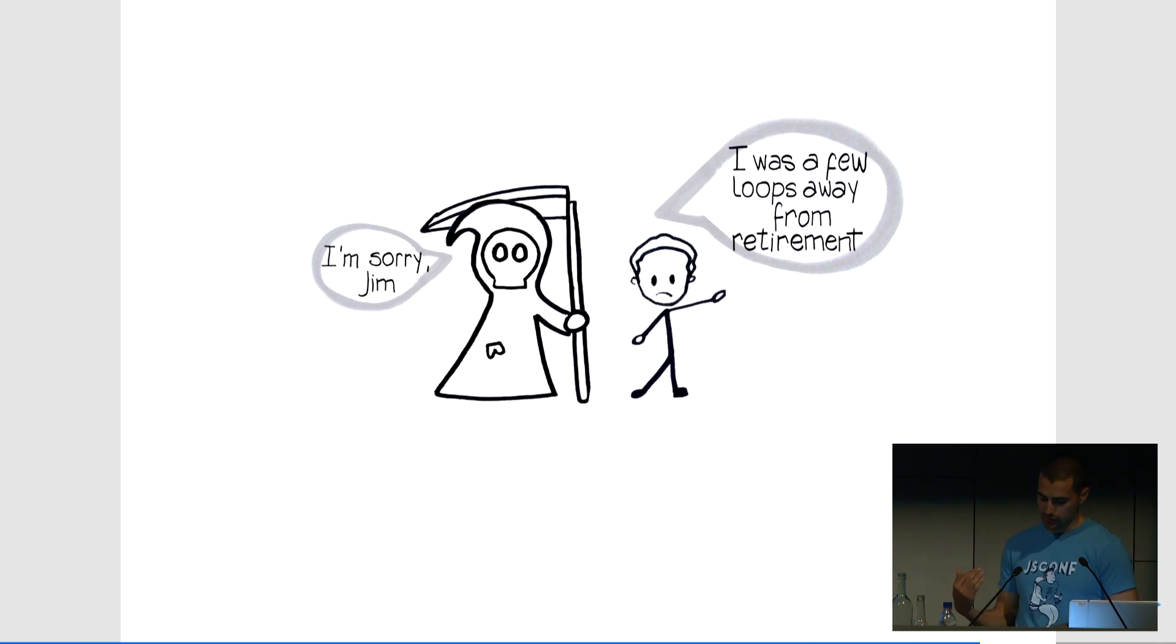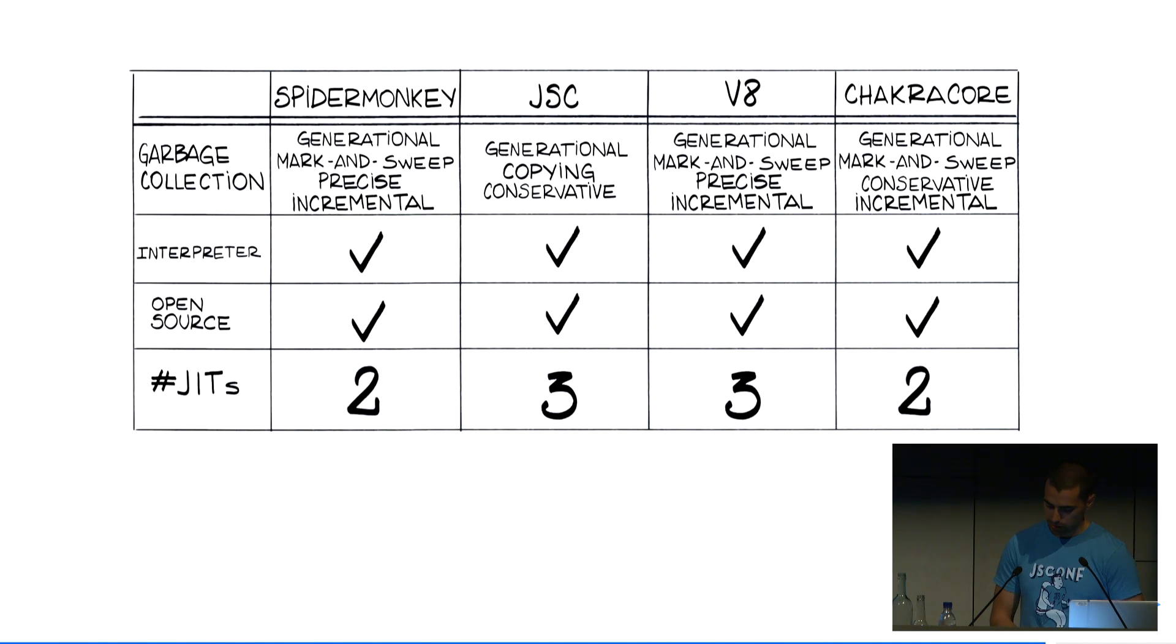We mentioned before that there's different strategies to implement garbage collecting systems. Here you can see a brief comparison of all the different implementations. Generational garbage collectors will group objects by their lifespan and will assume that young objects are more likely to die, sorry, than old objects. Under this strategy, the new objects are created in a nursery space, and long-lived objects are moved to a tenure space.